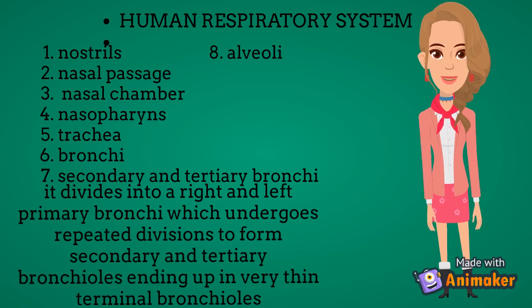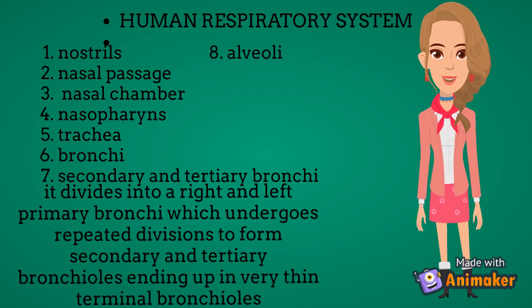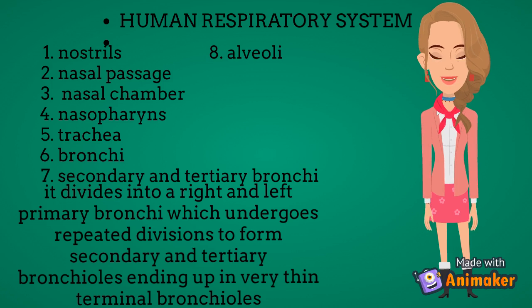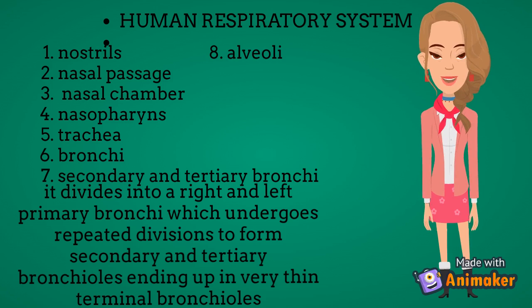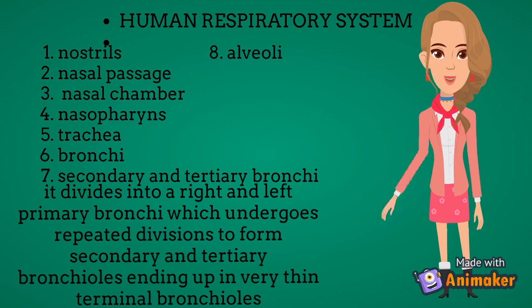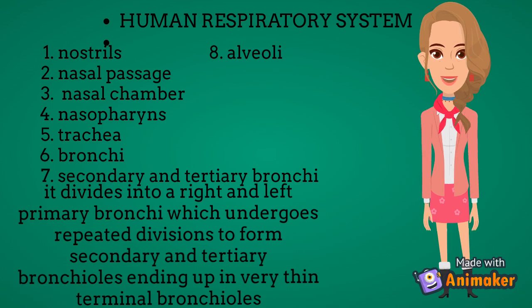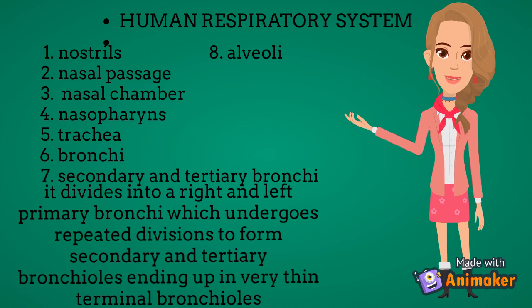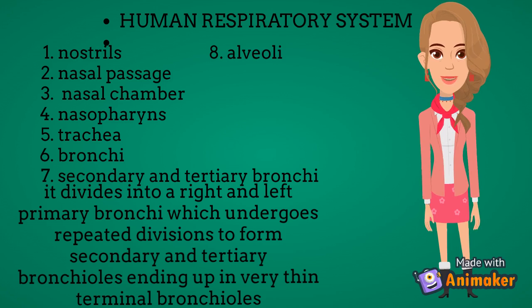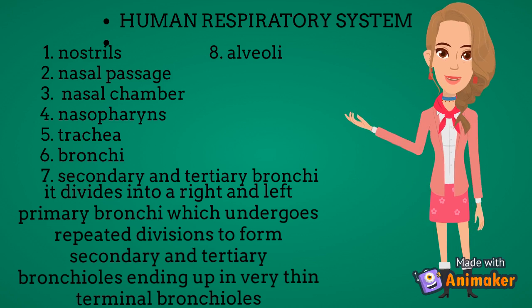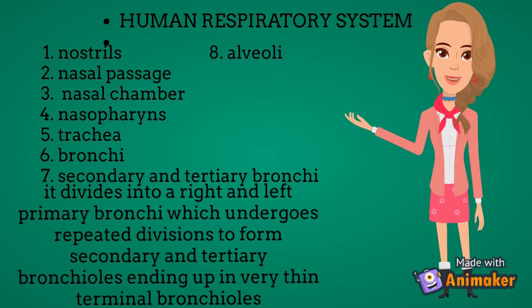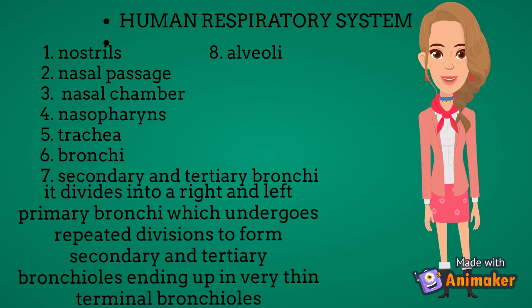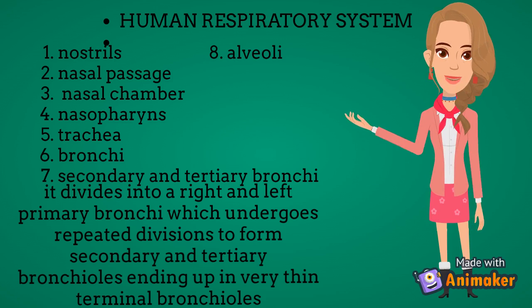The part starting from the external nostrils up to the terminal bronchioles constitutes the conducting part, whereas the alveoli and their ducts form the respiratory or exchange part of the respiratory system. The conducting part transports atmospheric air to the alveoli, clears it from foreign particles, humidifies it, and brings the air to body temperature. The exchange part is the site of actual diffusion of oxygen and carbon dioxide between blood and atmospheric air.